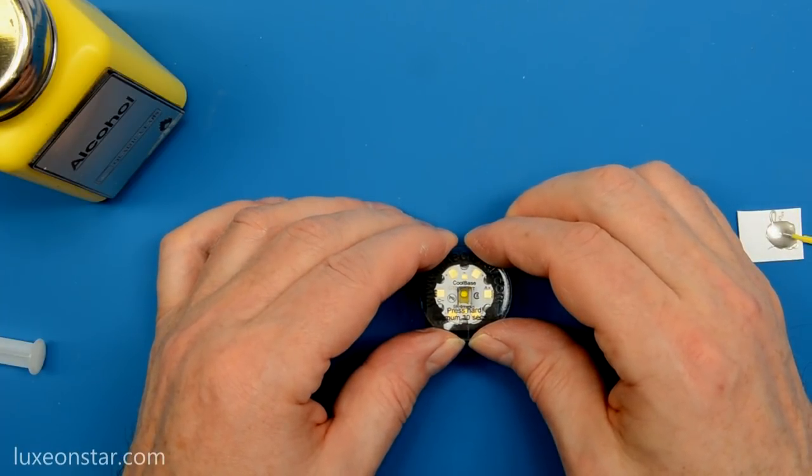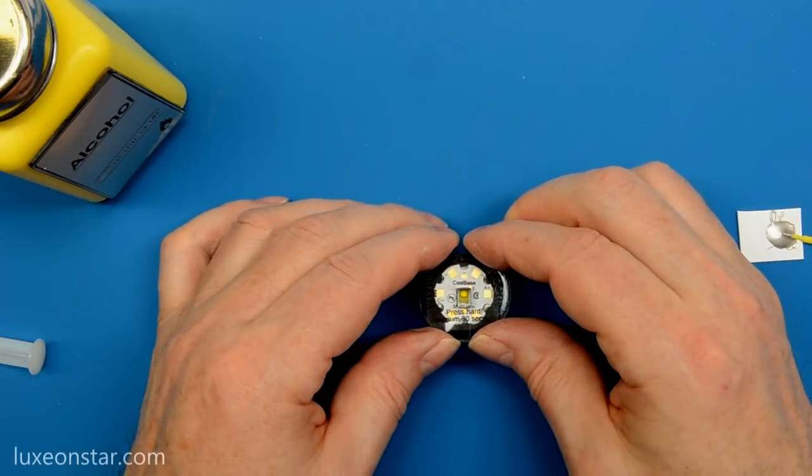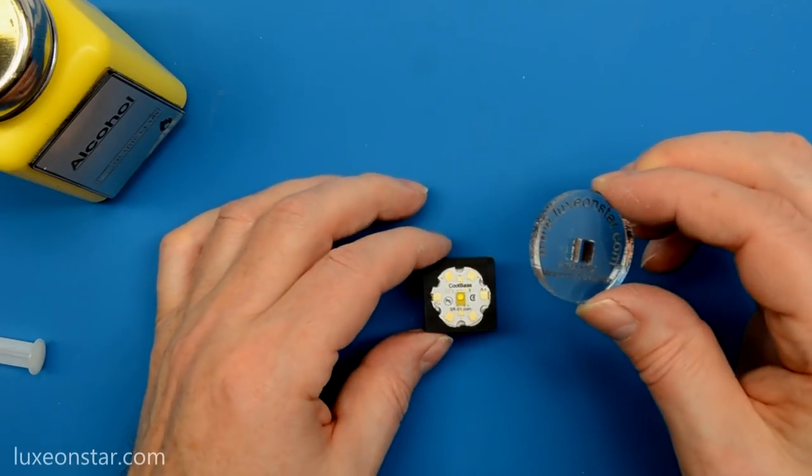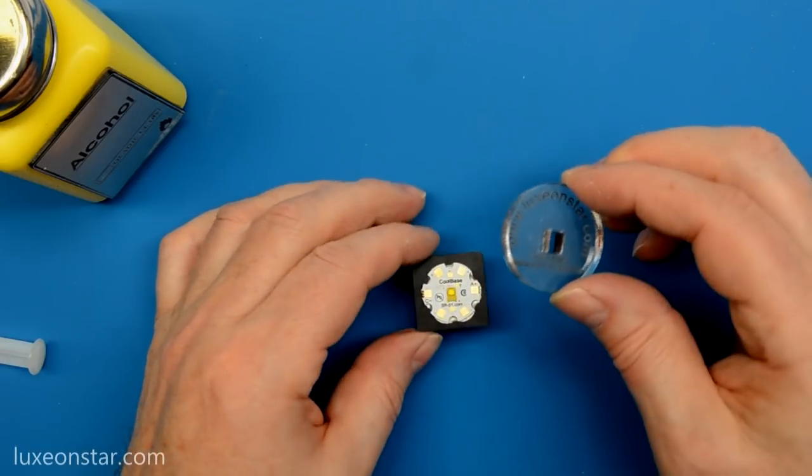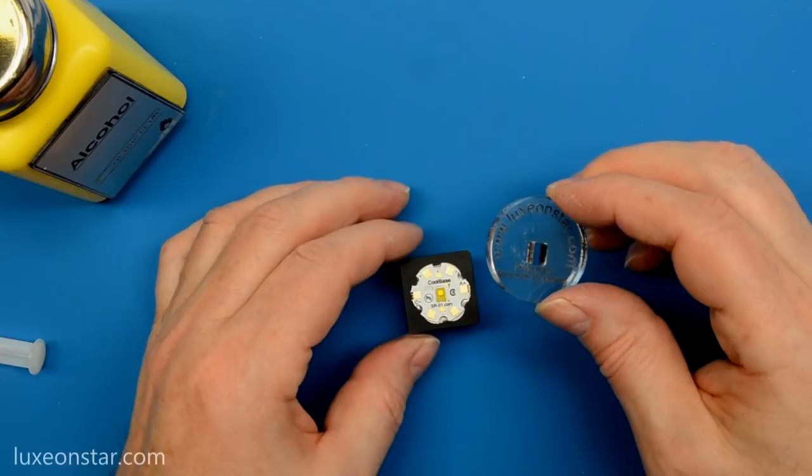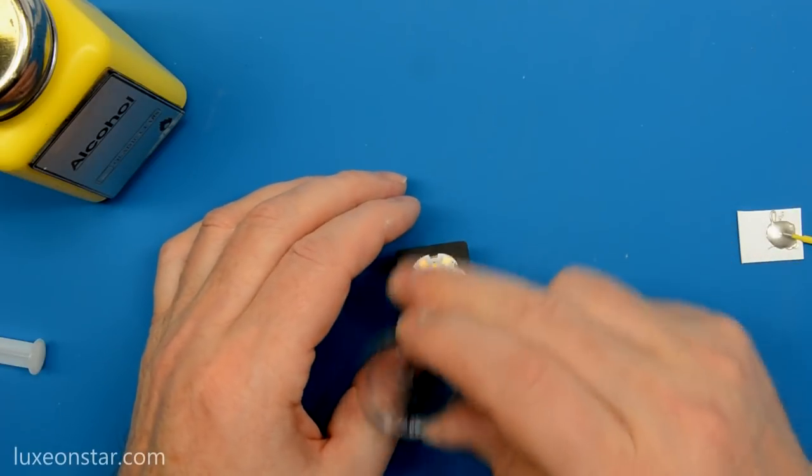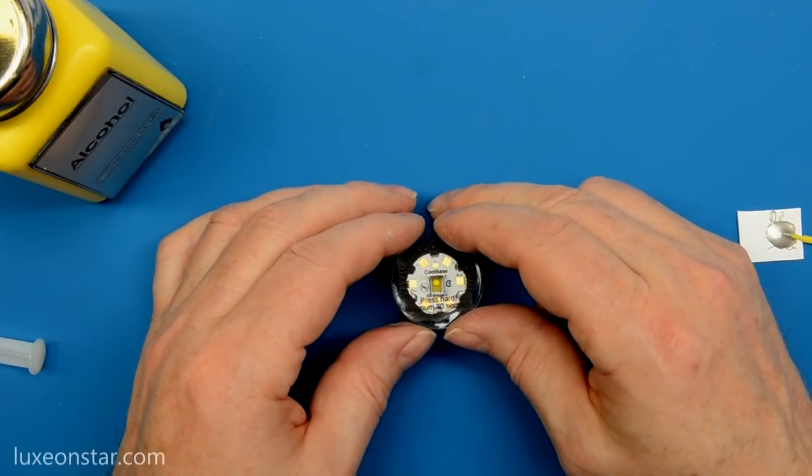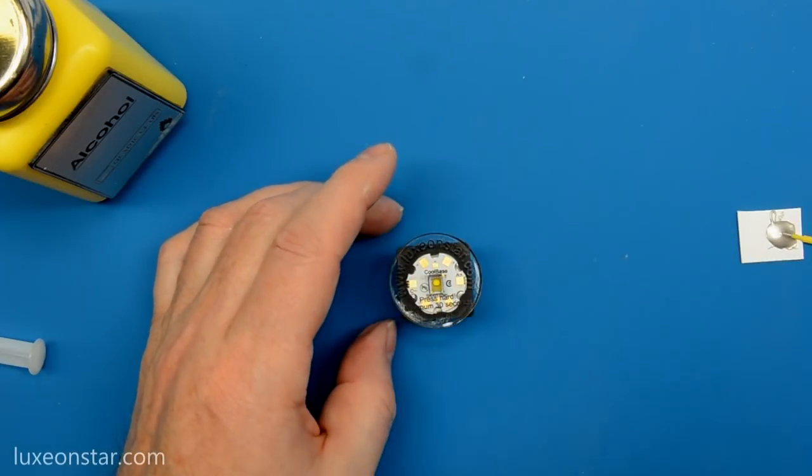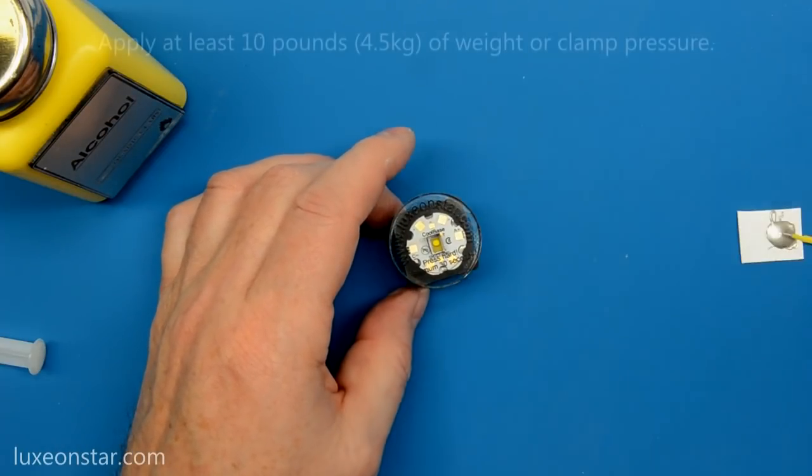And then just use that to position your LED where you want it on the heat sink. Now you've got time, this takes about five to ten minutes for the epoxy to set up, so there's time to do this. So get it in position. Don't worry about the epoxy that squeezes out, and avoid the temptation to try and wipe it off, just leave it alone. And then when you're satisfied with the positioning of that, you need to wait or clamp this in place while it sets up.